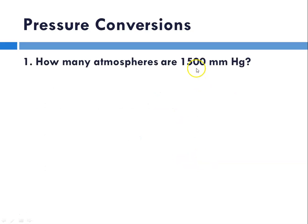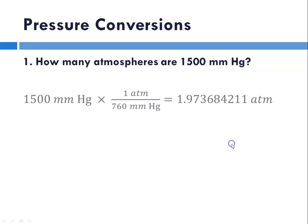How many atmospheres are 1,500 millimeters of mercury? We start with our given. This falls back on our ACE calculation method: Analyze, Calculate, Evaluate. We start with our given, 1,500 millimeters, multiply by our conversion factor. We're going from millimeters to atmospheres, so atmospheres has to be in the numerator and millimeters of mercury in the denominator. We cancel out millimeters of mercury.